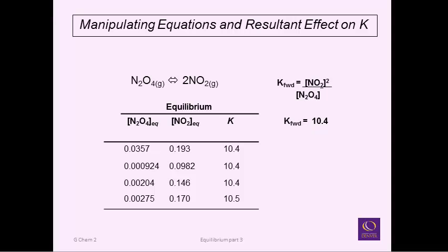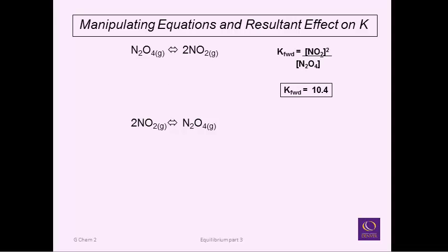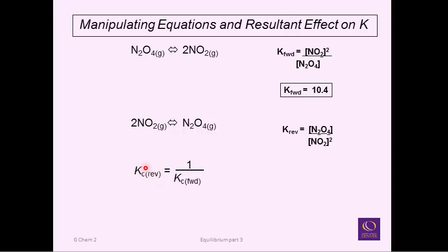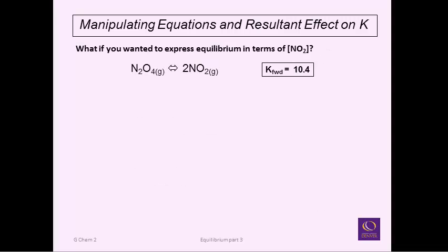Now let's apply the rule: what if we wanted to run it in reverse? We want to take two nitrogen dioxides and combine them to get dinitrogen tetroxide. The rule says the equilibrium constant for the reverse reaction is the inverse of the equilibrium constant for the forward reaction. So we know the forward K is 10.4; 1 divided by 10.4 gives 0.0962. That's how Rule 2 applies — running in reverse gives the inverse K.